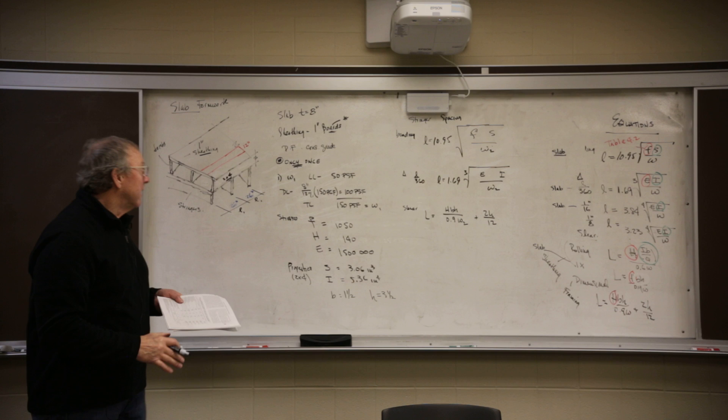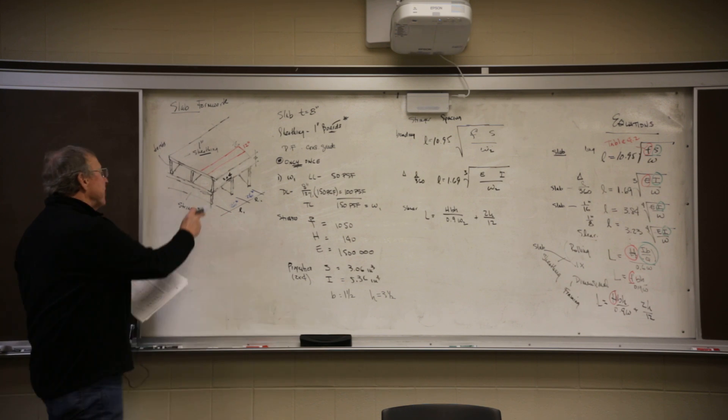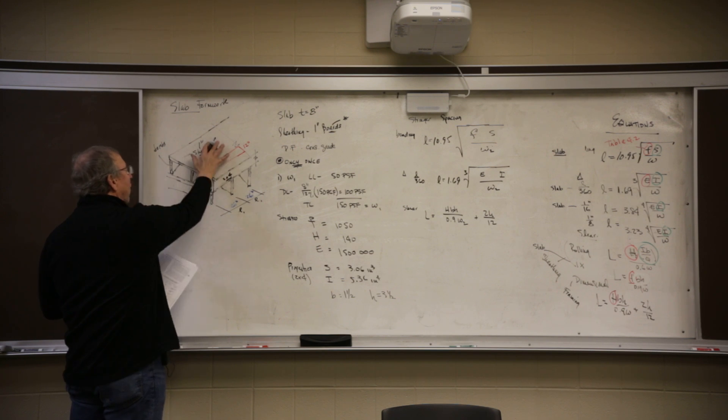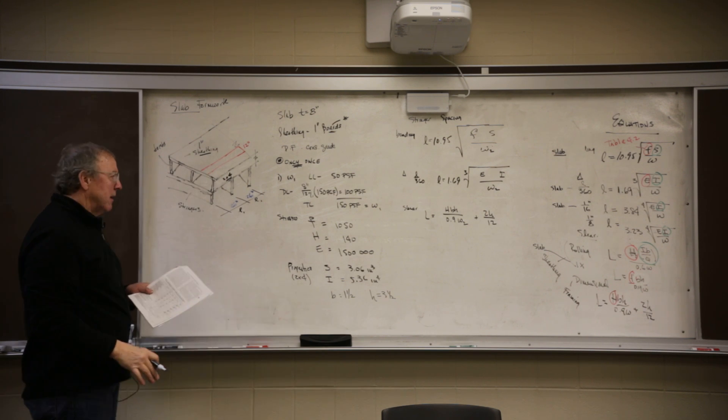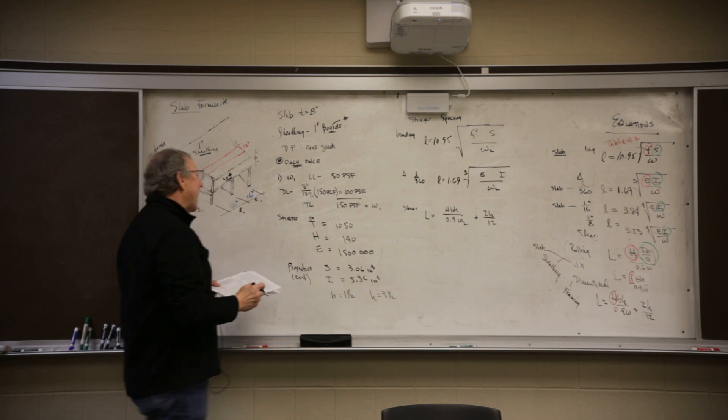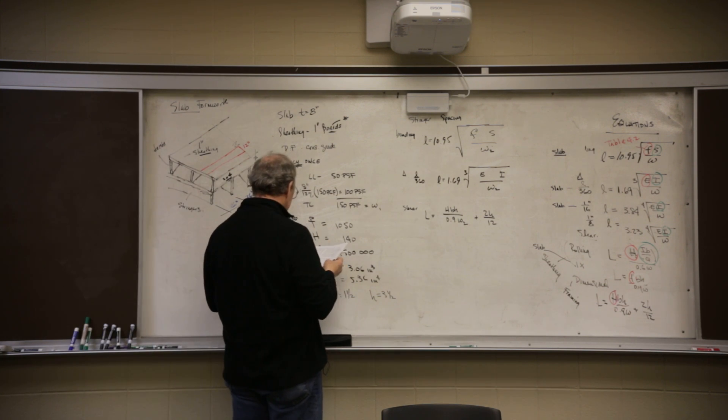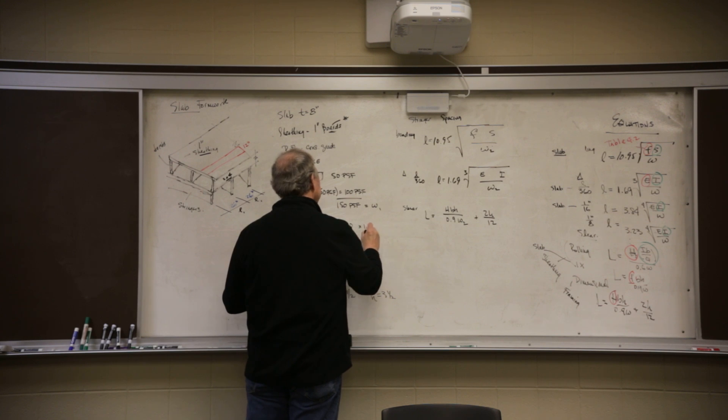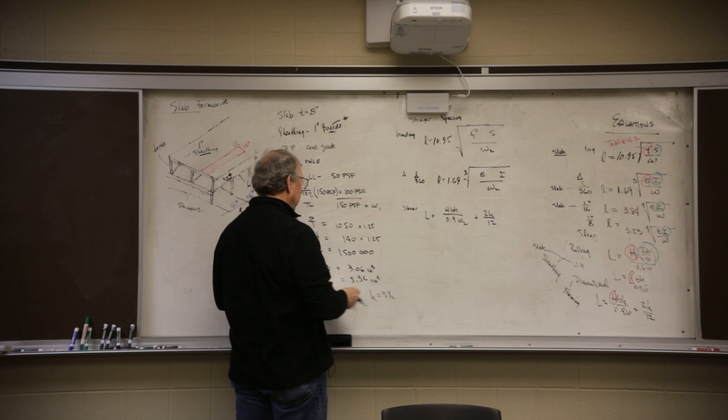It's not going to get wet. It's a joist, it's underneath. It's a stringer, it's underneath. So I've got joists here, stringers here. The only thing getting wet is the sheathing. So I don't have to worry about moisture. Do I have to worry about duration? Yes. It says it's a one time only. So I go to duration and it says increase by 25%.